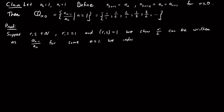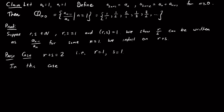We induct on R plus S. The smallest value R plus S can have is 2, when R equals 1 and S equals 1. So the base case is R plus S equals 2, meaning R equals 1 and S equals 1. In this case, R over S is 1 over 1, which is just A0 over A1. So the base case is in our set.